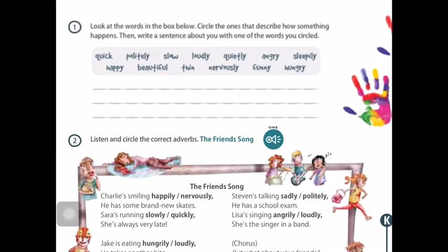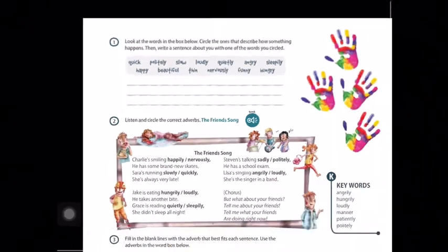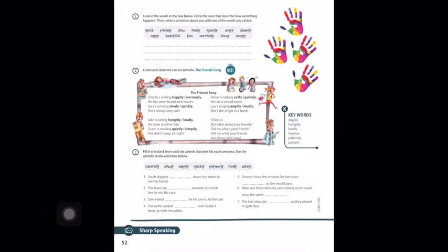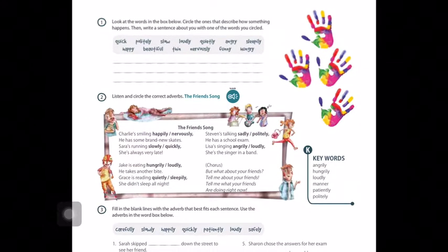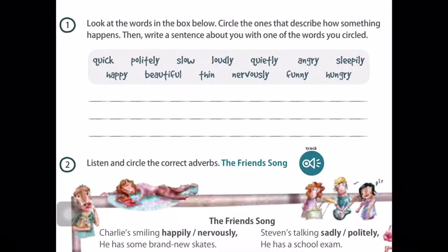Look at the words in the box below. Circle the ones that describe how something happens. Then write a sentence about you with one of the words you circled. Quick, politely, slow, loudly, quietly, angry, sleepily, happy, beautiful, thin, nervously, funny, and hungry.